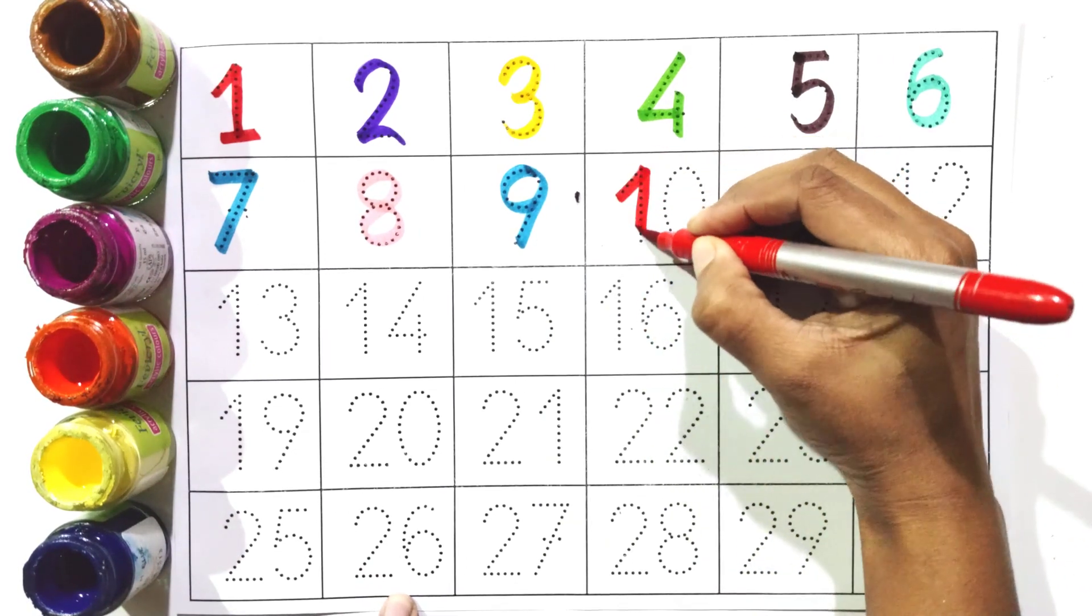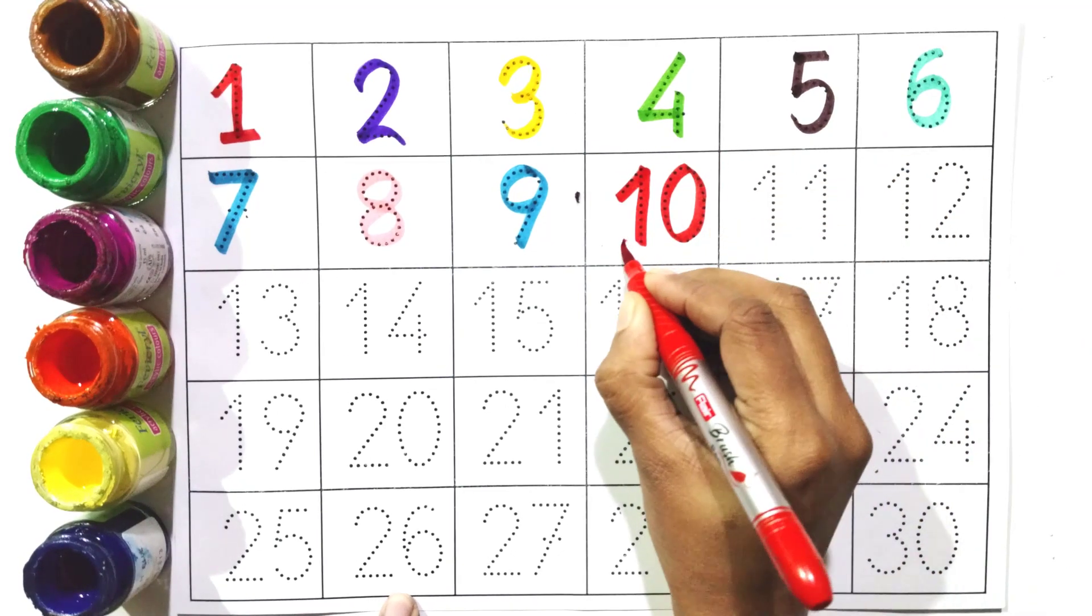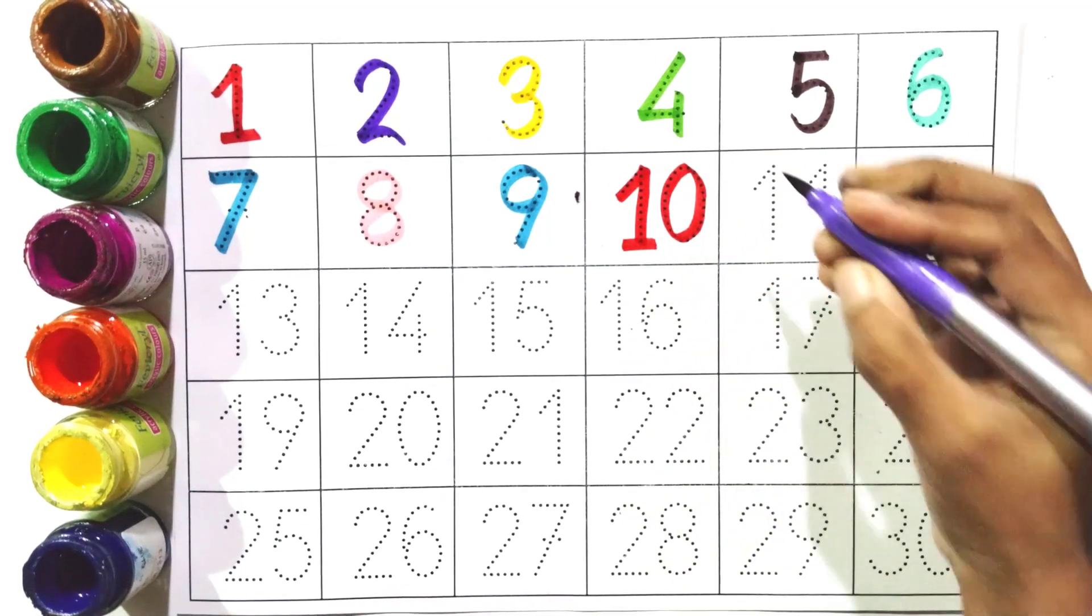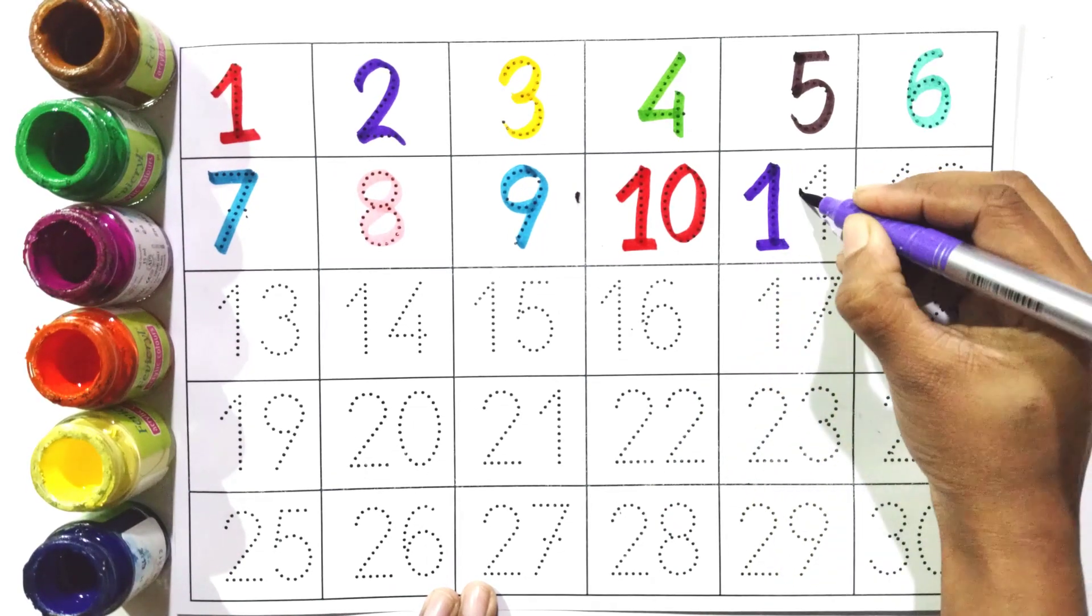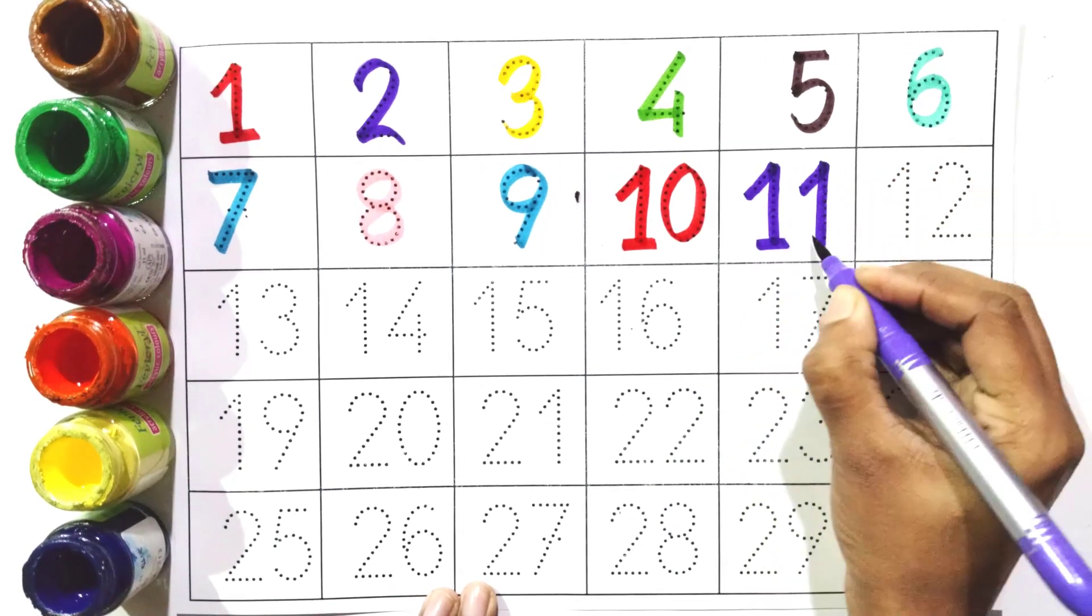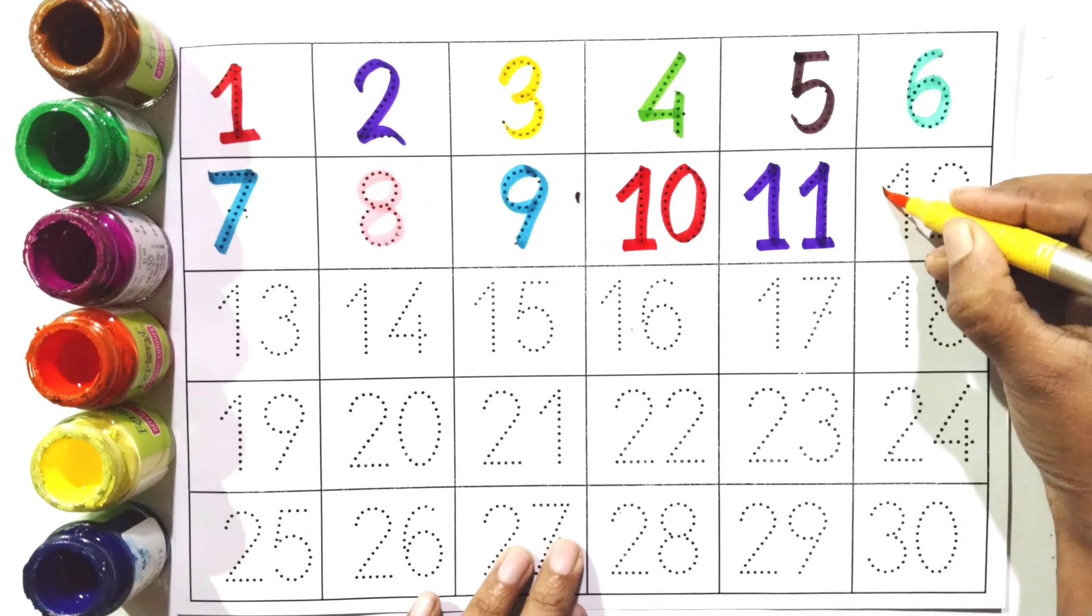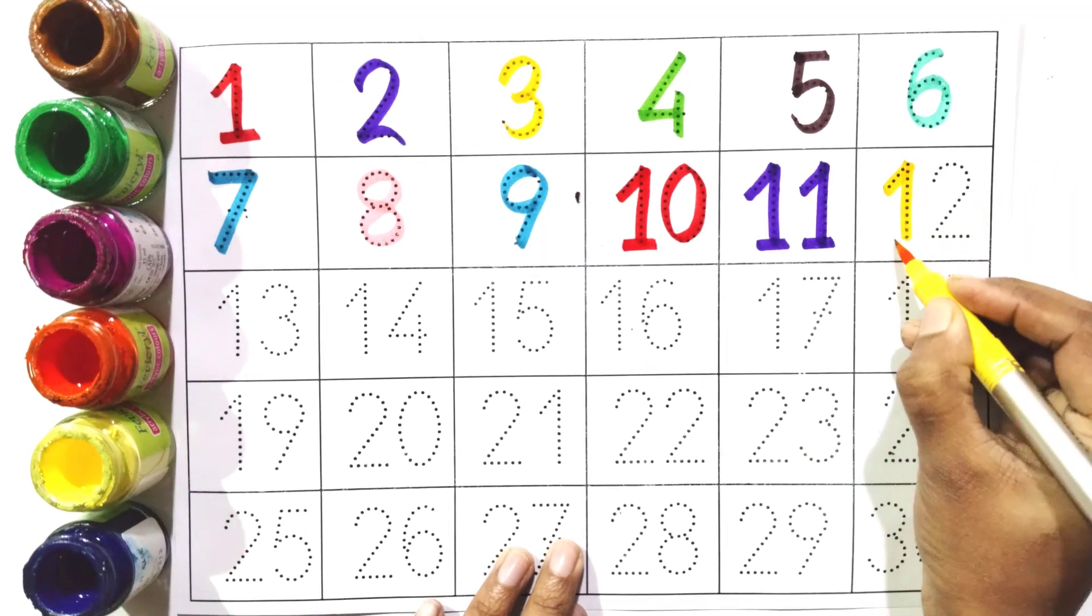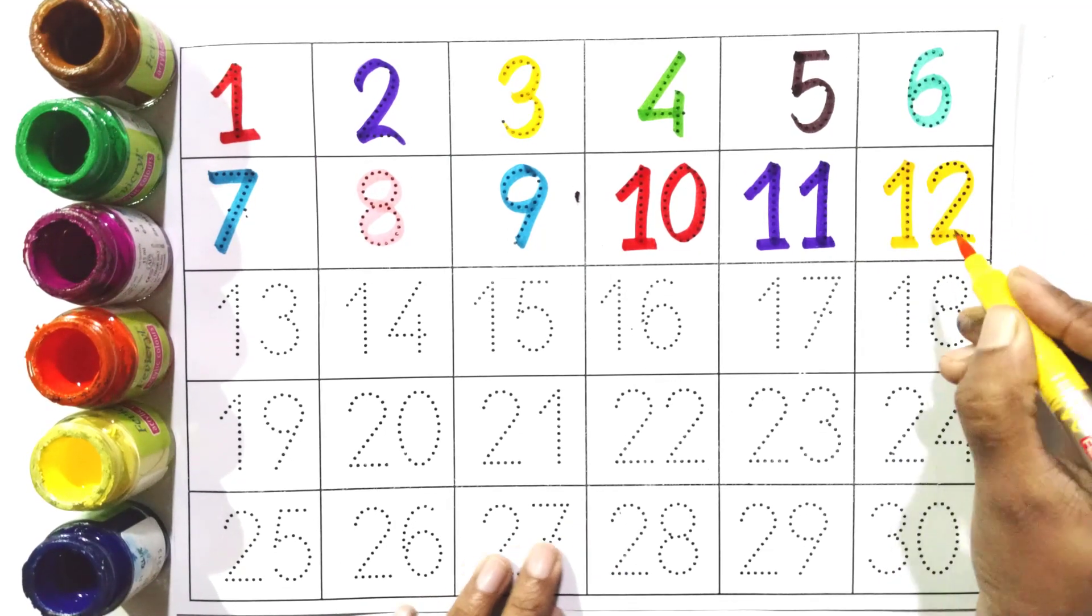One and zero, ten. One and one, eleven. One and two, twelve.